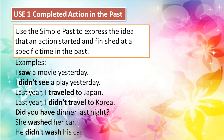Examples: 'I saw a movie yesterday.' — 'yesterday' is the specific time. 'I didn't see a play yesterday.' 'Last year, I traveled to Japan.' 'Last year, I didn't travel to Korea.' 'Did you have dinner last night?' 'She washed her car a few months ago.' 'He didn't wash his car.'